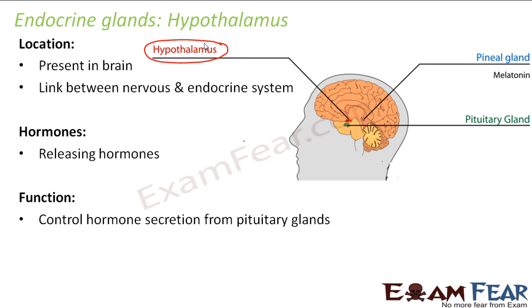The pituitary gland is called the master gland because its secretions control a lot of things inside our body. It is very important that hormones secreted from the pituitary gland are secreted in the right amount, so another hormone — from the hypothalamus — is needed to control that secretion. In the picture, the red structure is the hypothalamus and the green structure located just below it is the pituitary gland.